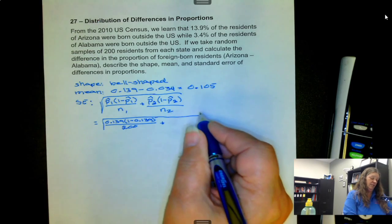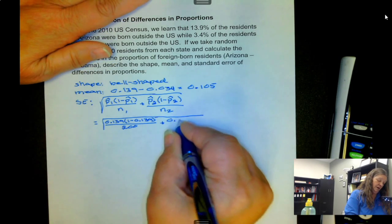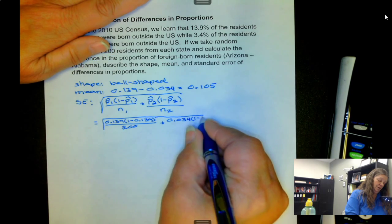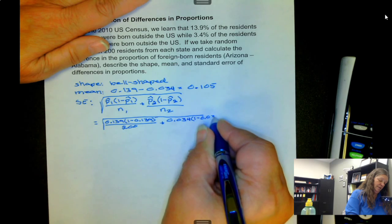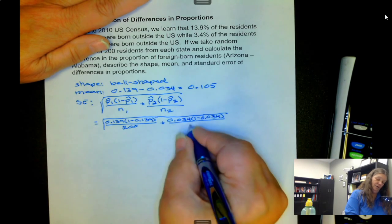So the sample size is going to be 200 for each of them. Then we have 0.034 times 1 minus 0.034, again over 200.